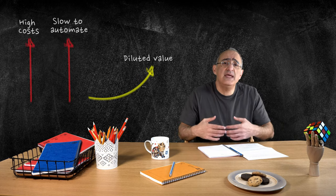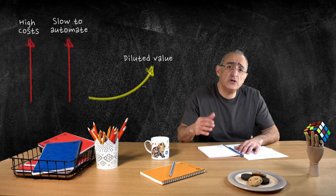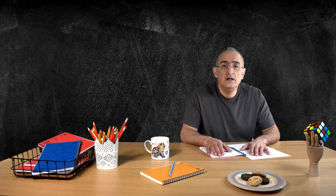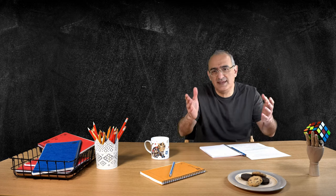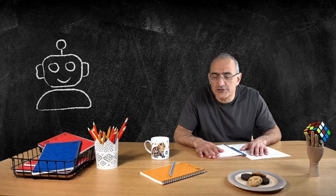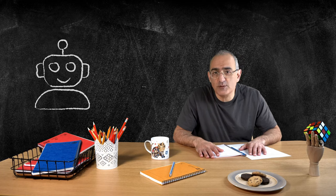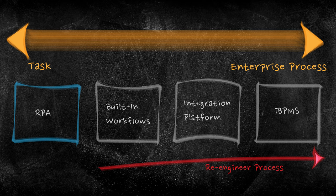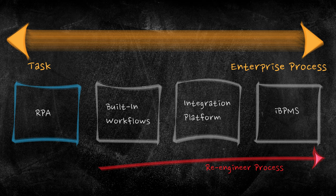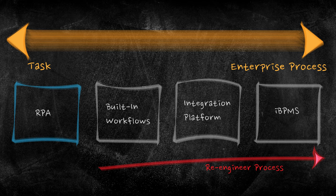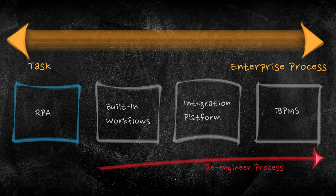But there is a new kid on the block, well, a big old teenager on the block, called Robotic Process Automation. Often referred to as RPA, it provides a platform to automate human tasks for applications that don't have an integration interface, such as copying information from one application and pasting it into another. RPA platforms use multiple techniques, including operating system APIs, optical character recognition, image recognition, and so on.